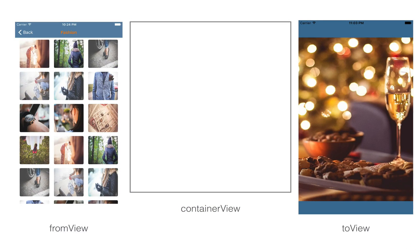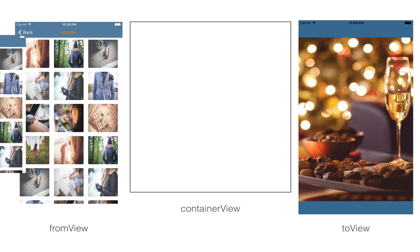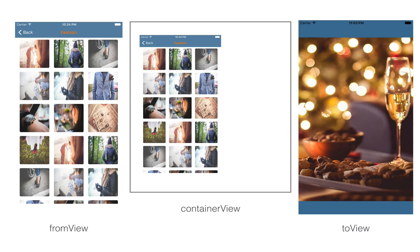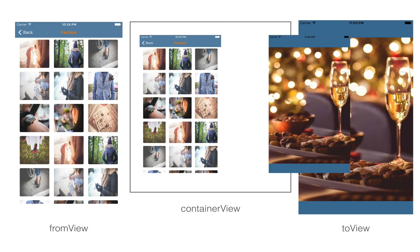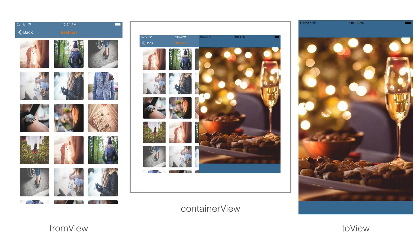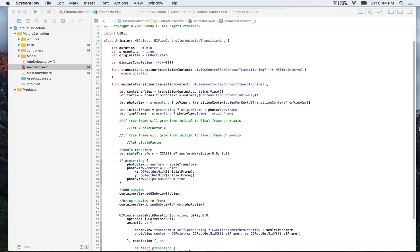To illustrate how the transition context works: in the middle we have a container view. On the left we have the fromView, which is the collection view with multiple cell pictures. Once we tap on a cell, we're going to want to see it full screen — that's represented by the toView on the right. When you tap on the cell, the old existing view is added to the container view, and the new view (toView) is also added to the container view but is not visible yet. Then it's brought to the front. Once the transition context finishes, we need to handle the transformation of the new view in order to allow it to scale and fill the screen.